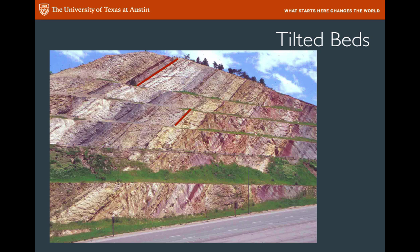Bedding can sometimes be tilted, and these beds are tilted. The red lines define the bedding planes, and you can see that they are tilted towards the left. If they started out as horizontal, then they tilted down, and we call this tilt direction — we would define it as being to the left, whatever compass direction that happens to be.